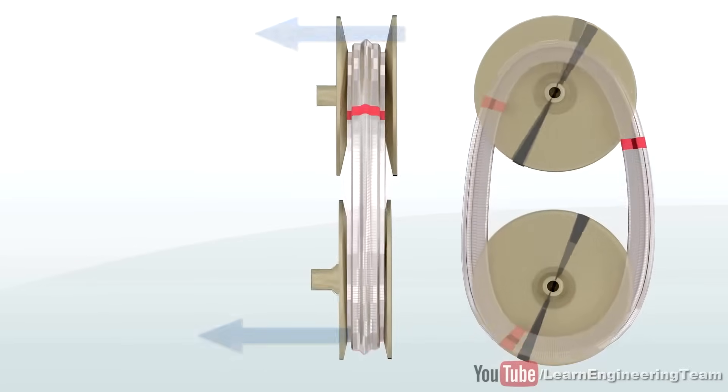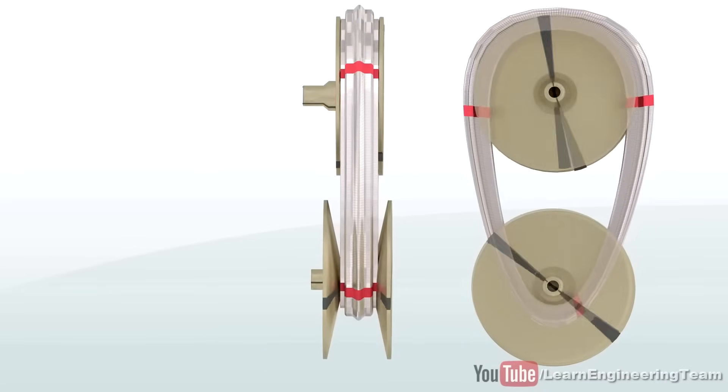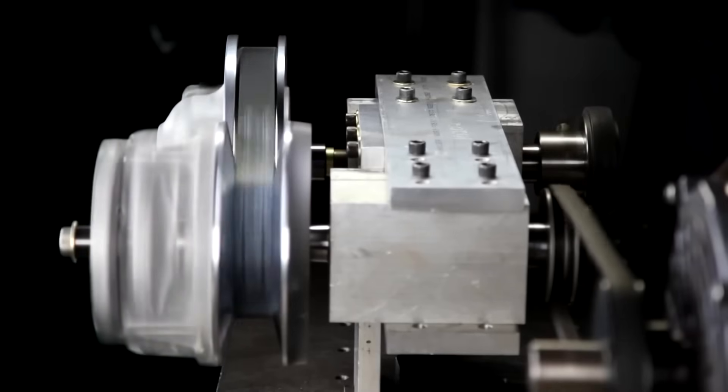CVT transmissions usually change the gear ratio using pulleys that expand or contract based on torque. Unlike regular gears, they offer a range of gear ratios, not a fixed one. As the engine is under a high load, the pulley connected to it gets smaller, and the one connected to the wheel gets bigger. This changes the ratio.